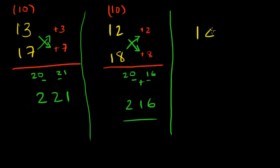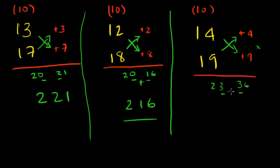14 into 19. So the base is 10. 10 plus 4 gives us 14, and 10 plus 9 gives us 19. And 19 plus 4 is 23. And 4 into 9 is 36. We're going to add these two. So the answer is 266.